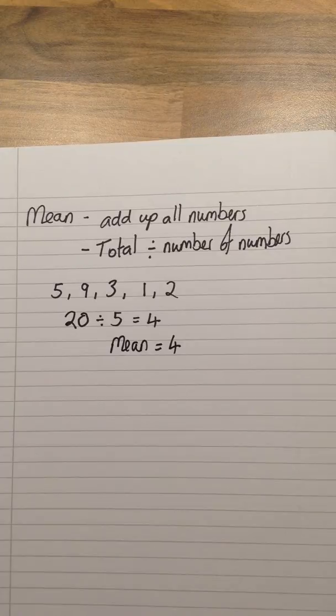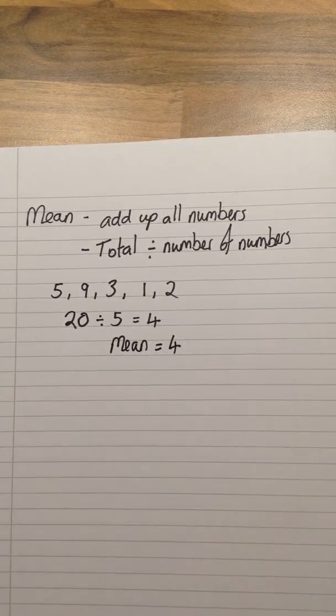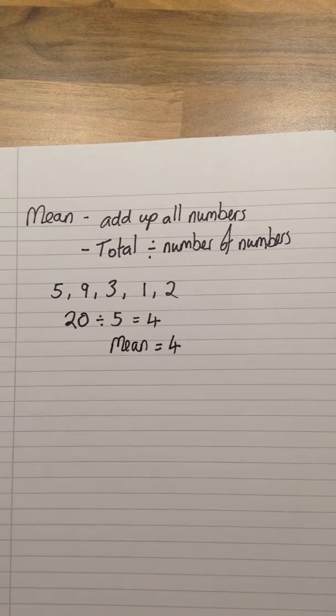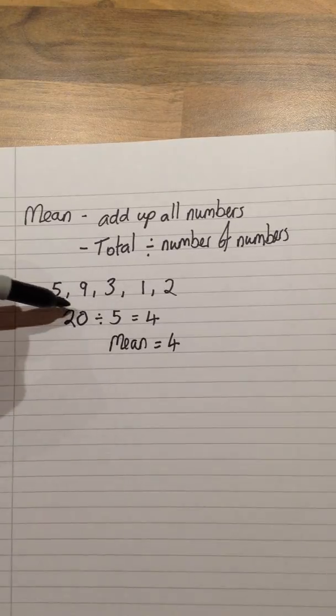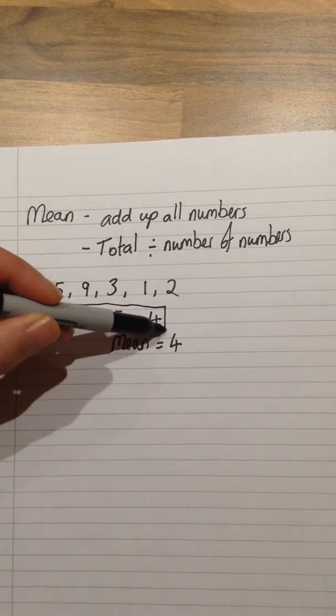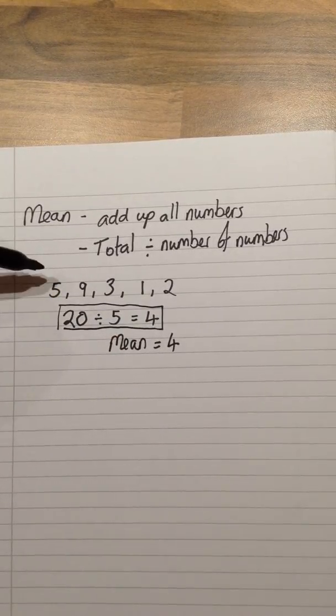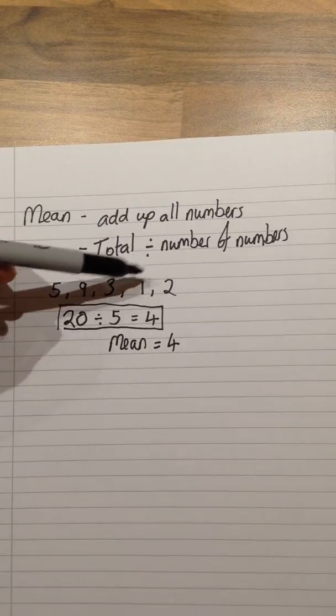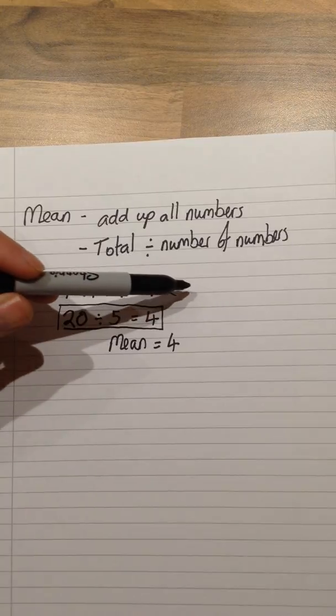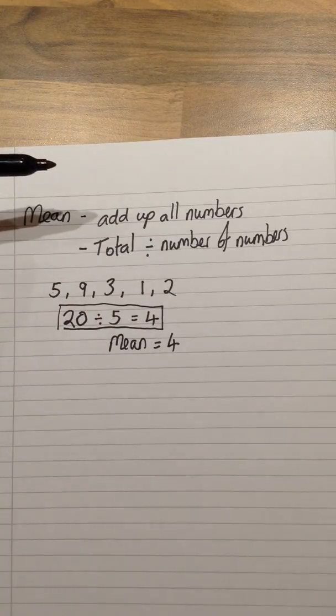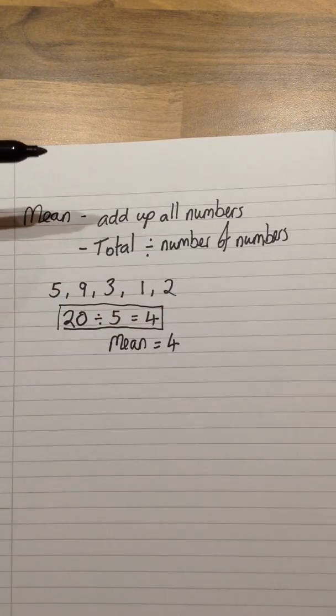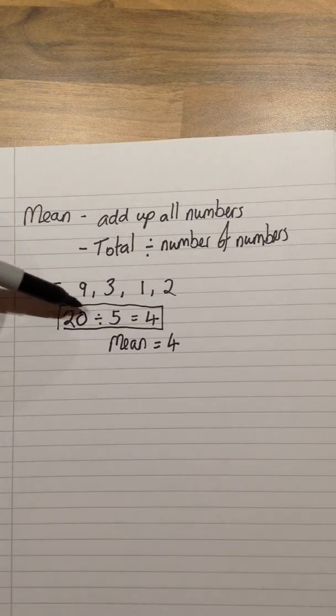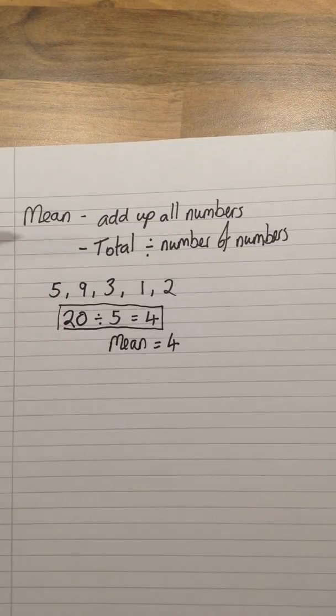There are no variations in this one until we get on to averages from a table. The only thing you need to look out for is if you are using a calculator, do step this into two different sections. Do not type into your calculator 5 plus 9 plus 3 plus 1 plus 2 and then straight away divide by 5, because what your calculator will do is use BIDMAS. It would only do 2 divided by 5, it would not take the total and divide that by 5.